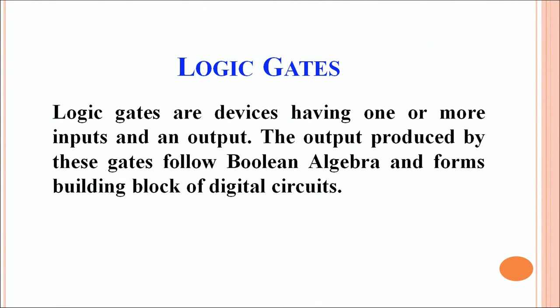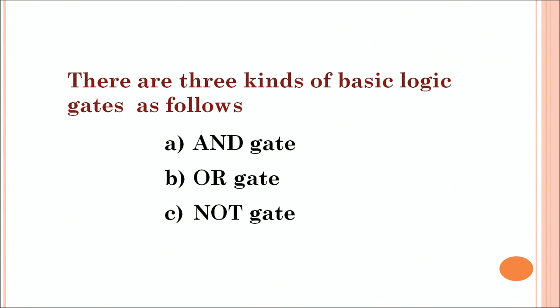Different mathematical operations can be performed using digital signals, and logic gates help us perform these operations. Logic gates are devices which have one or more inputs and an output. The output is produced using Boolean algebra, forming the basic building block of digital circuits. The three basic kinds of logic gates are the AND gate, OR gate, and NOT gate.